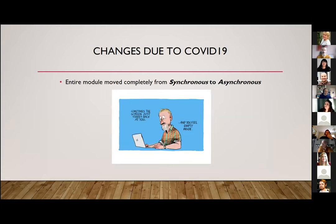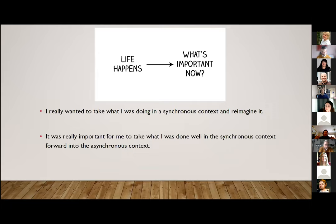When COVID came along, we had to move the entire module to a completely asynchronous environment, and there was a sense of awe and hopelessness when you were looking at the screen and the panic set in — it's already challenging enough to manage a module with 405 students in a face-to-face synchronous environment, let alone having to move the module completely to asynchronous. The main reason we had to go totally asynchronous was because of timetable changes and trying to meet the needs imposed by COVID in the university.